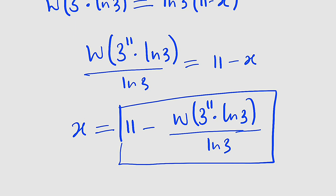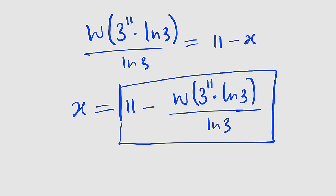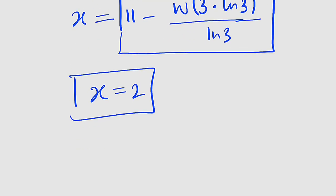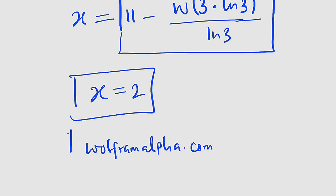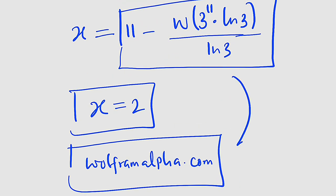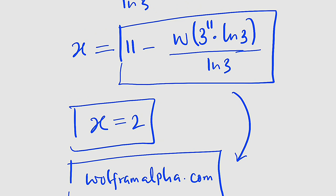If you use a Lambert W function calculator and input the whole expression, you will get x equals 2. You can also verify this using Wolfram Alpha — just enter the expression and it will confirm x equals 2. Thank you for watching. Do share with your learning colleagues and don't forget to subscribe to my YouTube channel for more exciting videos. Bye!